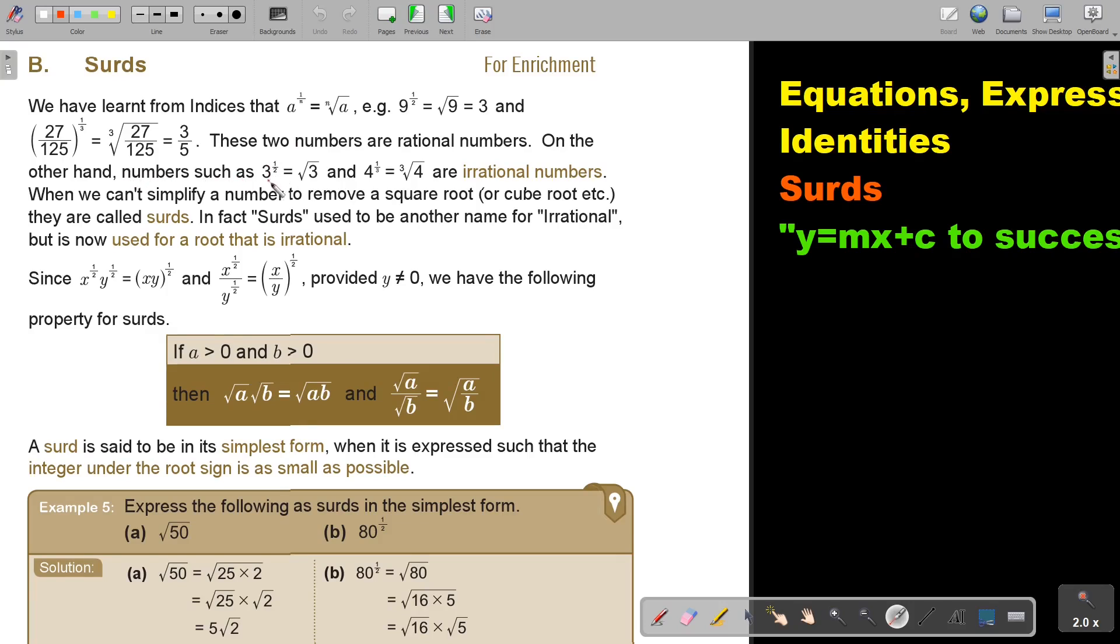On the other hand, numbers such as 3 to a half and 4 are irrational numbers. Because if you're going to press this on your calculator, the decimal places will just go on and on. They don't stop. So you cannot write it as a vulgar fraction.